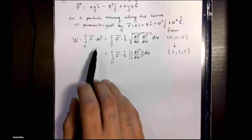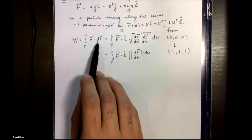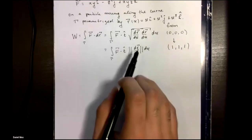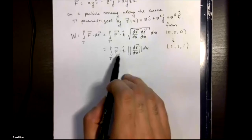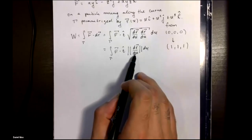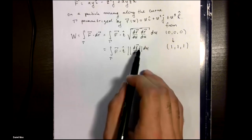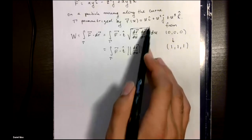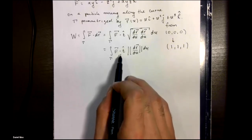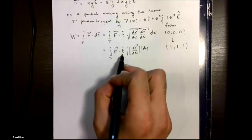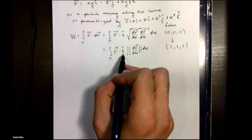In the lectures we saw that to calculate a line integral where your path is parametrized like this, one way of doing it is by finding the norm of the derivative of your parametric representation with respect to the parameter u, and then finding the product of the force with the tangent vector along that curve.